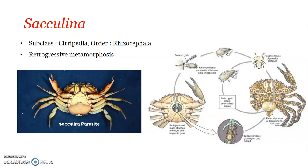In both sexes of the crab, infection by Sacculina inhibits reproductive activities, resulting in atrophy or degeneration of the gonads. This degeneration of the gonads of the host crab due to parasitic infection by Sacculina is known as parasitic castration. It develops because of parasitism by Sacculina on the crab.